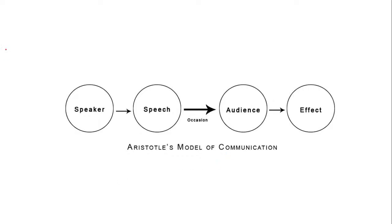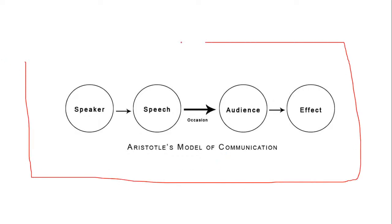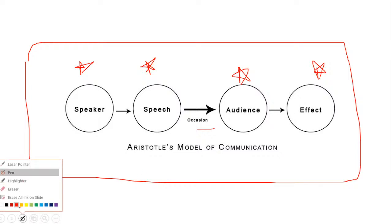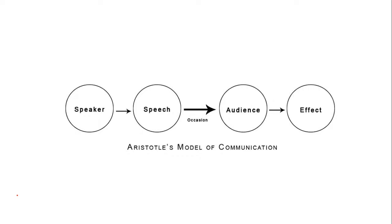Let's start with the first model of communication — Aristotle's model. This is a diagrammatic presentation. The model includes the elements: speaker, speech, audience, effect, and the occasion — the moment when things happen. In the diagram, Aristotle's model starts and initiates with the speaker, followed by speech, then audience, and finally the effect.